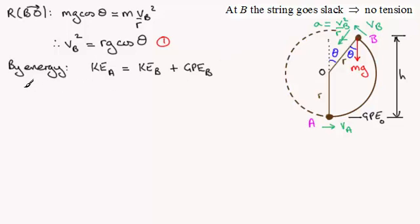So let's fill in our values. For the kinetic energy at A, it's going to be a half m times the speed at A squared, half mV_A squared.